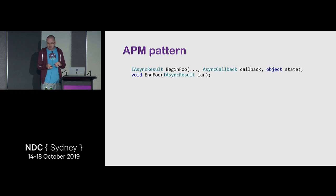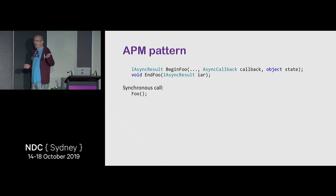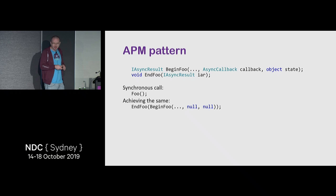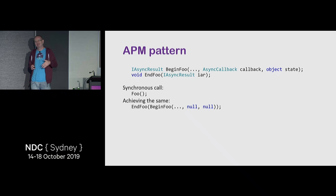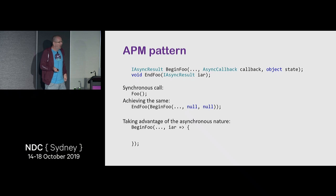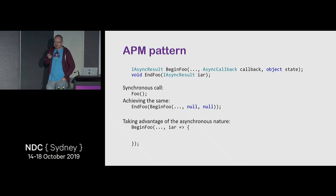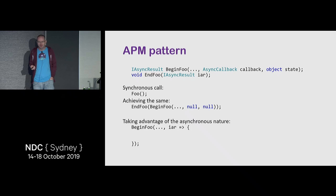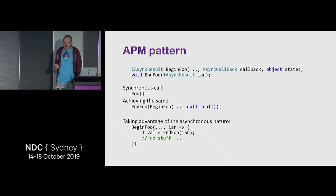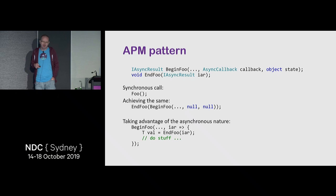A synchronous call would look like calling foo. The async alternative — many BCL functions had both — was BeginFoo and EndFoo. To achieve the same as synchronous, you'd call EndFoo on BeginFoo passing null for callback and null for state. To actually take advantage of the async nature, you'd call BeginFoo with a lambda callback, and inside that callback call EndFoo on the IAsyncResult and get the value out.